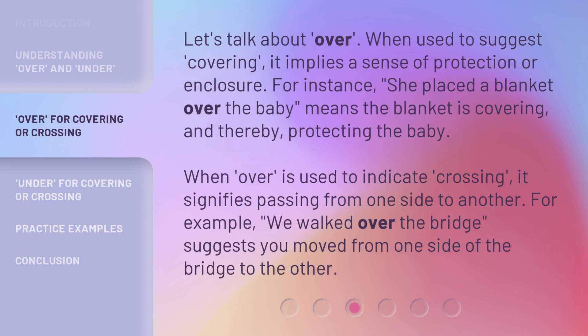Let's talk about over. When used to suggest covering, it implies a sense of protection or enclosure. For instance, she placed a blanket over the baby means the blanket is covering and thereby protecting the baby. When over is used to indicate crossing, it signifies passing from one side to another. For example, we walked over the bridge suggests you moved from one side of the bridge to the other.